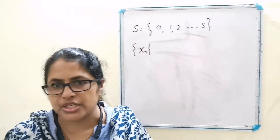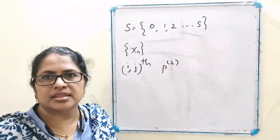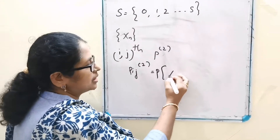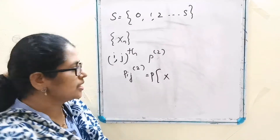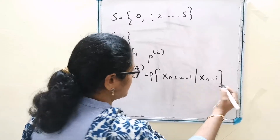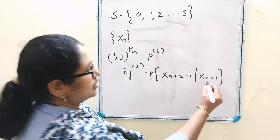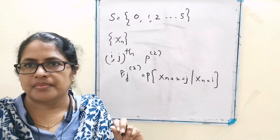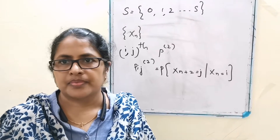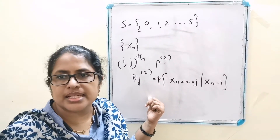Then what is P²? Consider the ijth element of P². P_ij² is equal to the probability of X_{n+2} equals j given X_n equals i. The corresponding events can be split up into a number of mutually exclusive cases — that is, at the end of the first transition the system can be in any of the k possible states which belong to S.